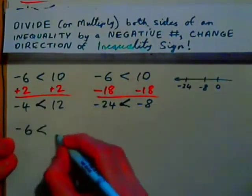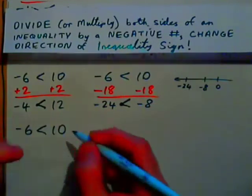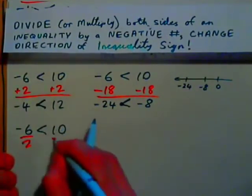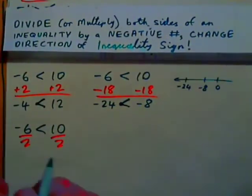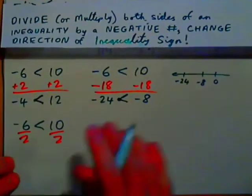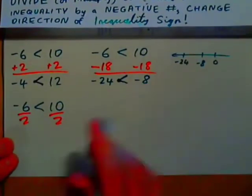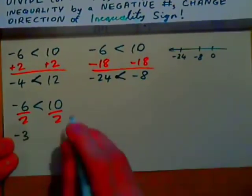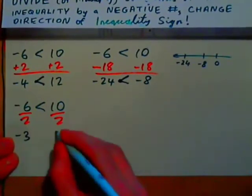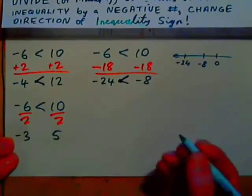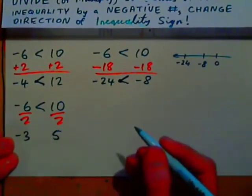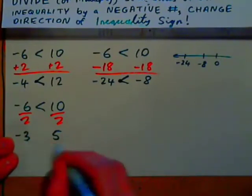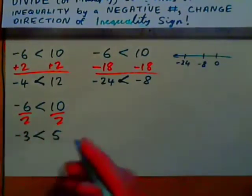Negative 6 is less than 10. Let's divide both sides by a positive 2. On the left we get negative 3; on the right we get 5. Negative 3 is still less than 5, so the sign goes the same way. Dividing by a positive number does not change the direction of the inequality.